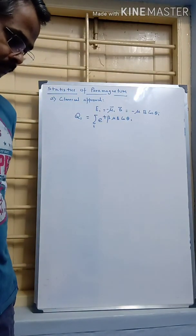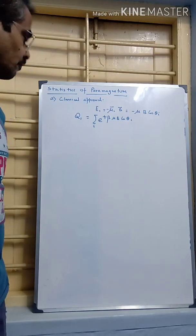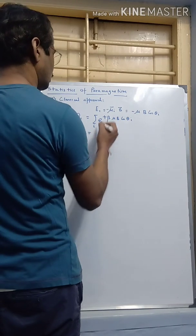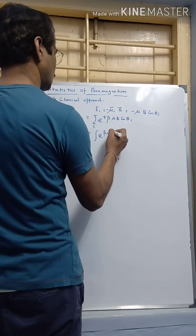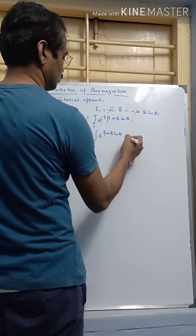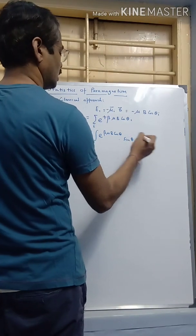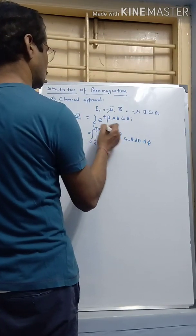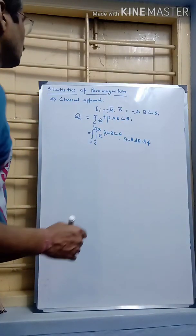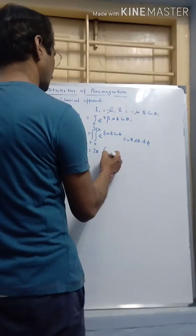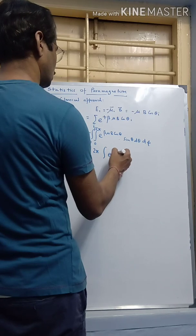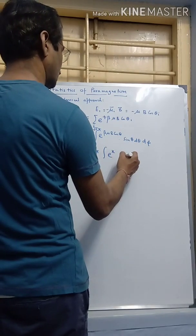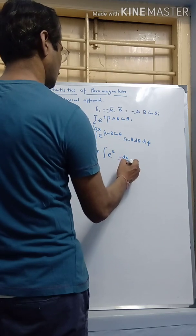Now, considering all possible angles and all possible orientations, we can transform this to an integral of e to the power β μ B cos θ, times sin θ dθ for all azimuthal angles dφ. There would be a 0 to 2π for dφ and 0 to π for θ. We can do a substitution x = β μ B cos θ, so dx = minus dx / (β μ B).